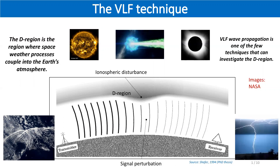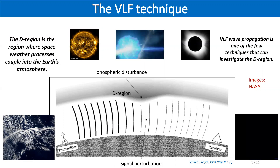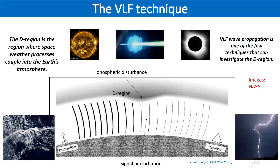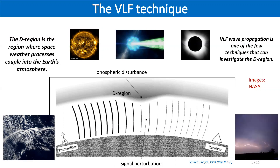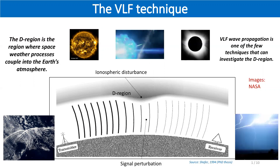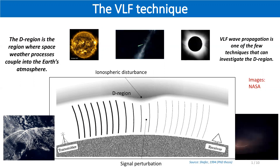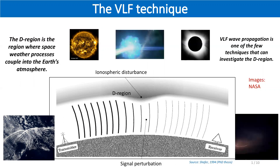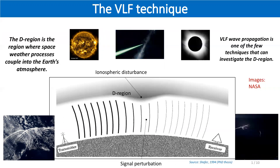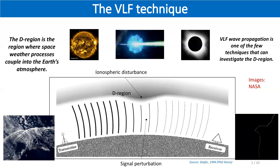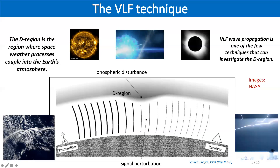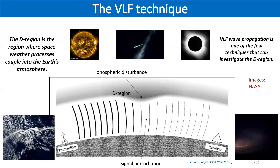The electron density of the lower ionosphere presents great variability, both spatial and temporal. How can this be useful in scientific research? There is a diversity of physical phenomena that are able to alter significantly the conductivity in the ionosphere. These phenomena can have their origin at Earth, for example, lightning activity and atmospheric waves.